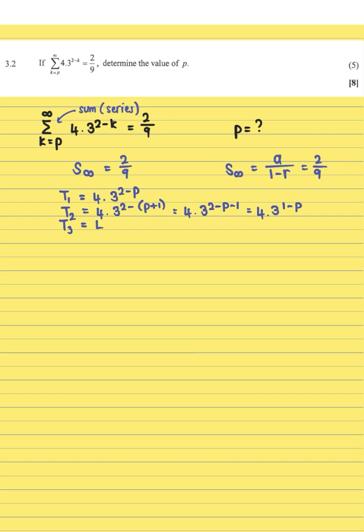For term 3, we take the general formula and substitute p plus 2 for our k value. Remember, for the first term k is p, for the second term k is p plus 1, and for the third term k is p plus 2. So we have 4 times 3 to the 2 minus p minus 2, which simplifies to 4 times 3 to the power of negative p because 2 minus 2 is zero.